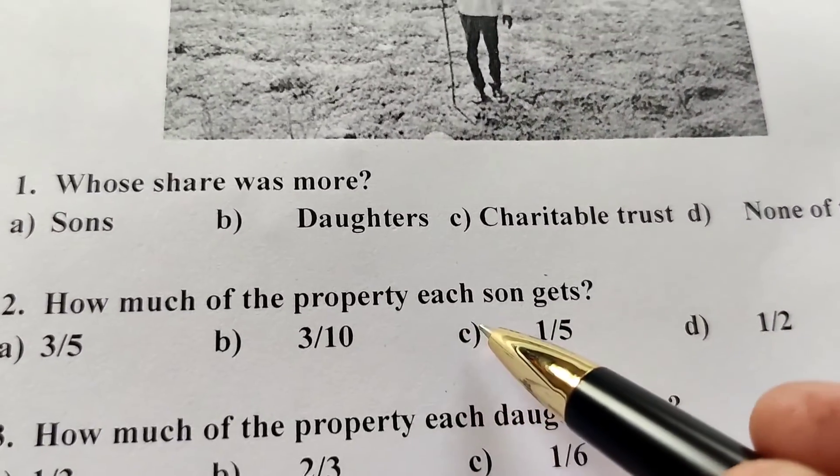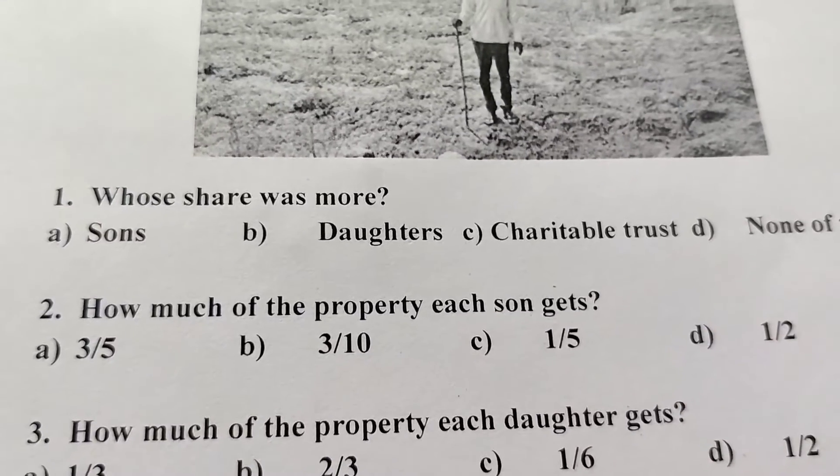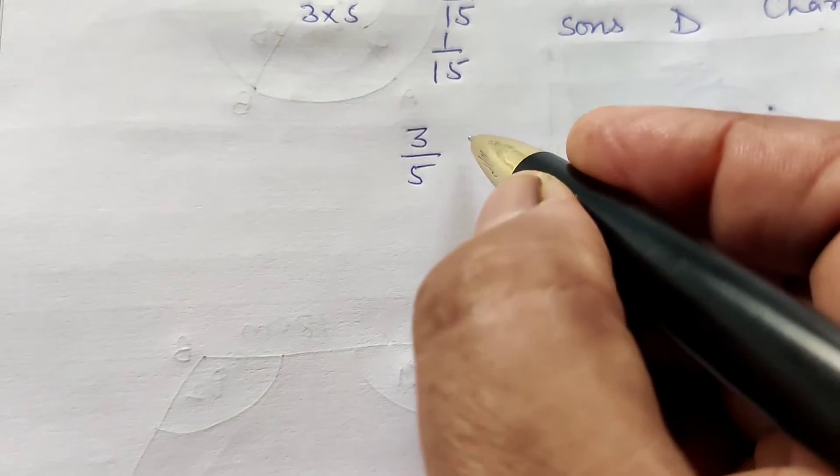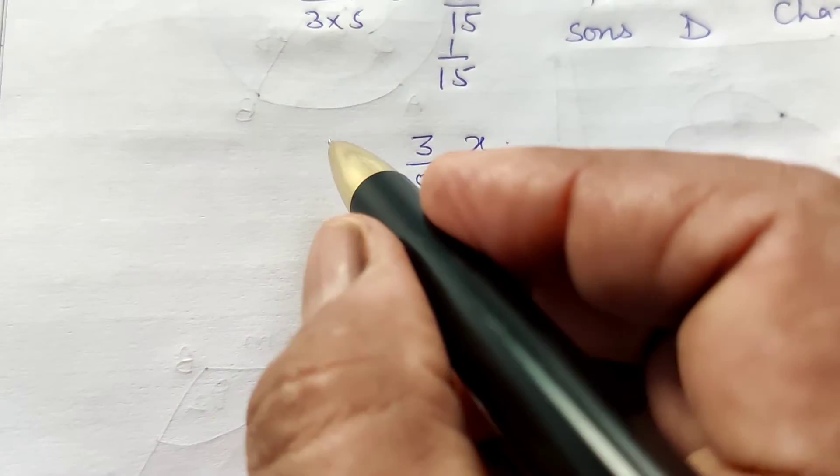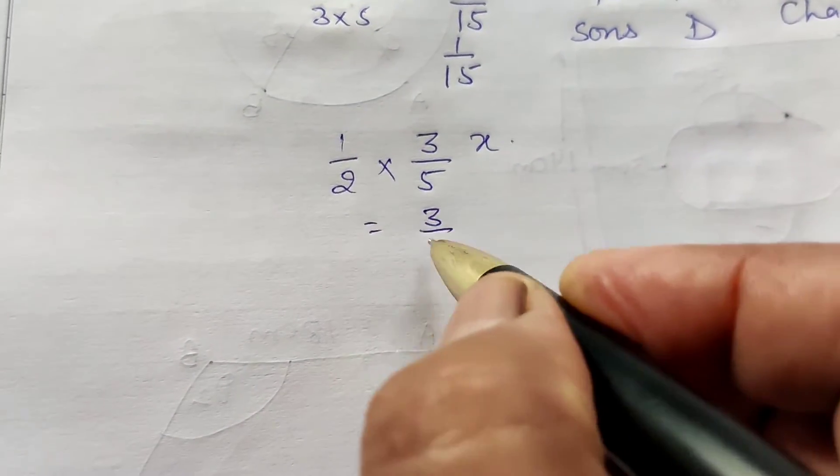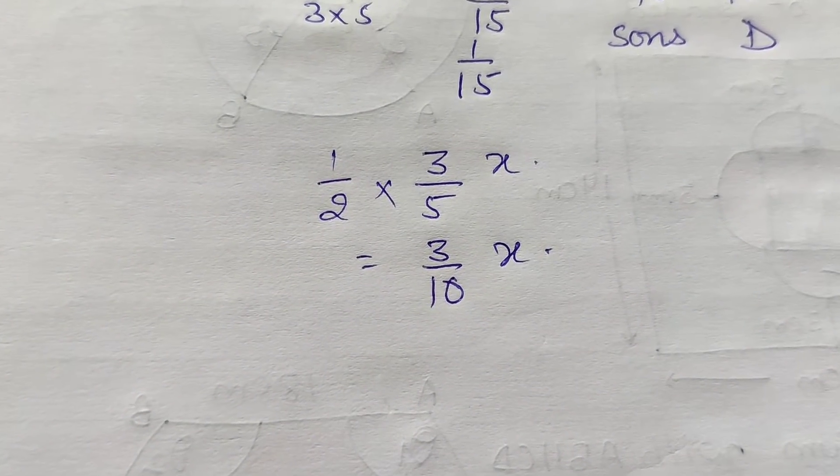Second question: How much of the property each son gets? The total portion of the property of the sons is 3/5. So now each son gets half of this. It is equal to the 3/10 part of the property. Each son gets 3/10.